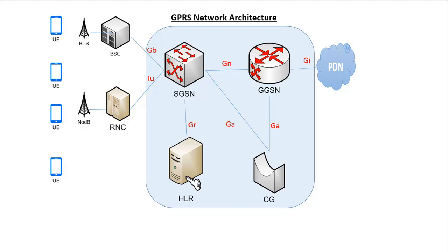GPRS refers to General Packet Radio Service. The GPRS network aims to transfer data and signaling in an efficient manner, and optimize the use of network and radio resources.